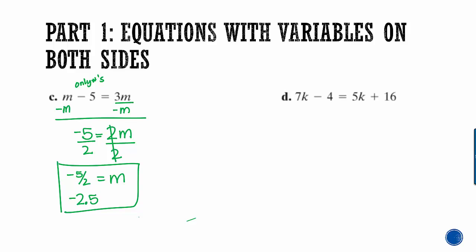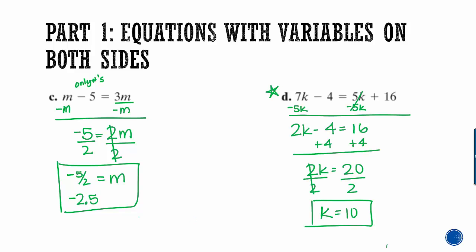Try this next one on your own. Go ahead and pause the video and make sure that you can get the correct answer for k. So I got that k is 10. I moved all of my k's over to the left and all of my numbers over to the right. And then I had to divide by 2 to get k all alone. So if you did not get this, go and trace through my steps. Chances are it was just a negative sign somewhere that got you a little off.